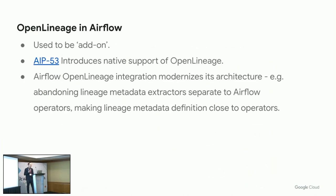In Apache Airflow, OpenLineage used to be an add-on with limited adoption. But since Airflow 2.5.3, it becomes a more native, first-class citizen. A lot of good things come with that, like modernization of its architecture and getting rid of extractors. In the past, we had this dichotomy of operators in one place and extractors living elsewhere — operators change, you need to update extractors separately, making it hard to keep things in sync. Now it's all in one place, in the operators. Hopefully in the future, when we develop new operators, we'll remember to add lineage information as well.